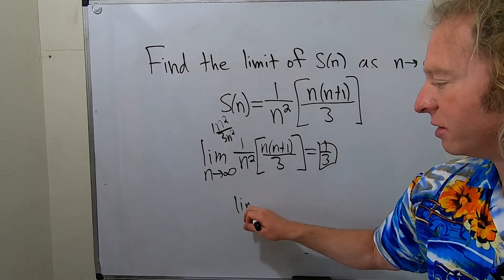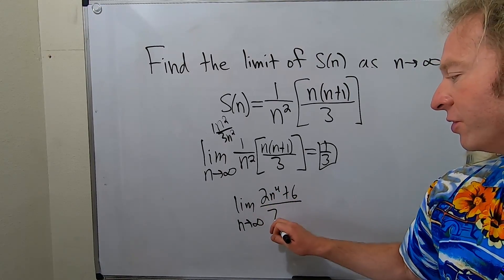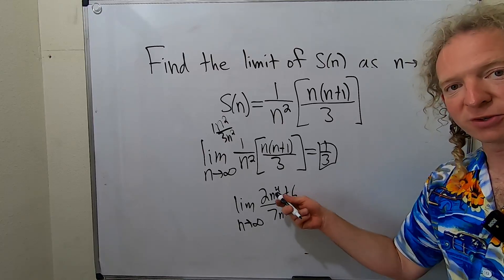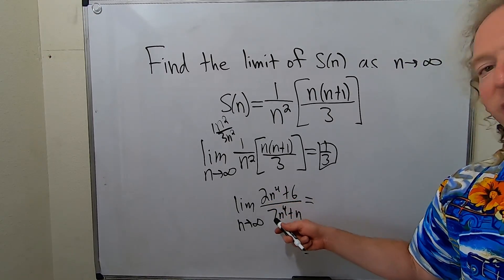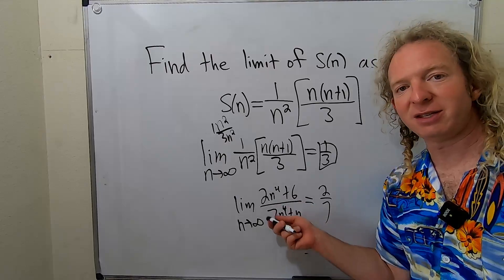For example, say it was 2n to the fourth plus 6 over 7n to the fourth plus n. The highest degree terms are n to the fourths. So it would be 2 over 7 because they match. Whenever these numbers match, you just divide these numbers.